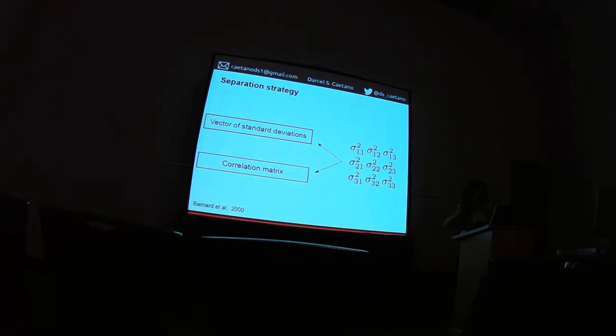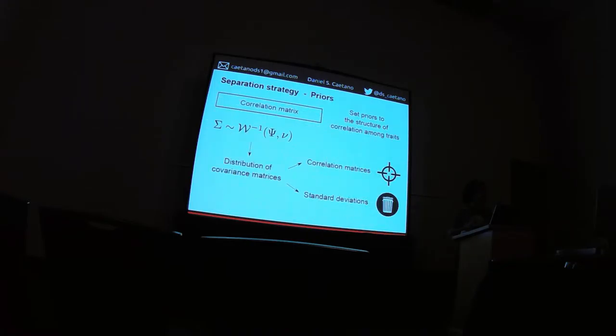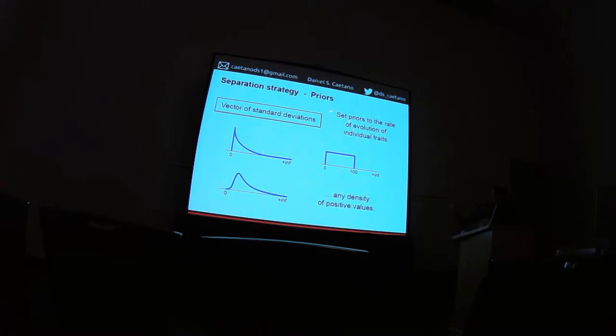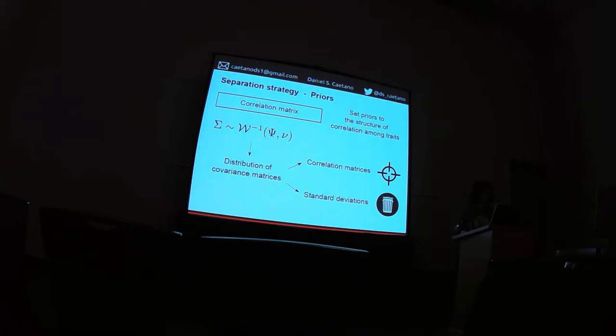So the first thing that we can do to help us is to separate this covariance matrix in two parts, with just standard deviation vector and a correlation matrix, which also allows us to play with nice and flexible priors. So we can put prior on the rate of evolution of the individual traits, and this could be any distribution of positive values. And we can also put priors in the covariance matrix, which is the correlation among these traits. So here, talking about the covariance matrix, we need to put prior on the inverse Wishart, which is covariance matrix, and then we separate them in the correlation and standard deviation, we throw this part away.